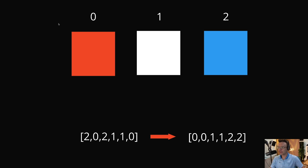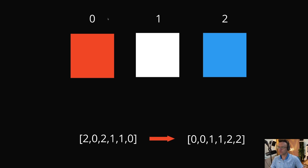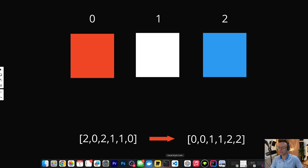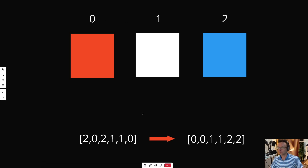Kind of a corny name, but I didn't invent it. What they want you to do is sort zeros, ones, and twos so that they are in order. They call it the Dutch National Flag Problem, but what they really want is for you to take an unsorted array composed of zeros, ones, and twos and sort it so that you get corresponding zeros, ones, and twos in order.